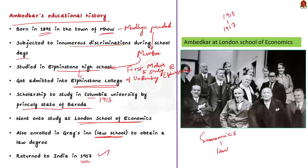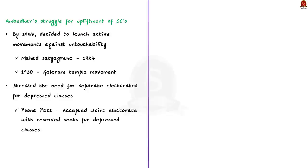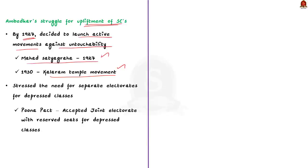After returning to India, Ambedkar's life was primarily dedicated towards the upliftment of scheduled classes. He worked in different jobs to take care of his family. Being a recipient of caste-based discrimination all through his life, his attention shifted towards welfare of the scheduled classes. By 1927, Ambedkar had desired to launch active movements against untouchability. He began with public movements and marches to open public drinking water resources, and also began a struggle for the right of scheduled classes to enter Hindu temples. The famous Mahad Satyagraha took place in 1927 and in 1930 the Kalaram Temple movement took place.